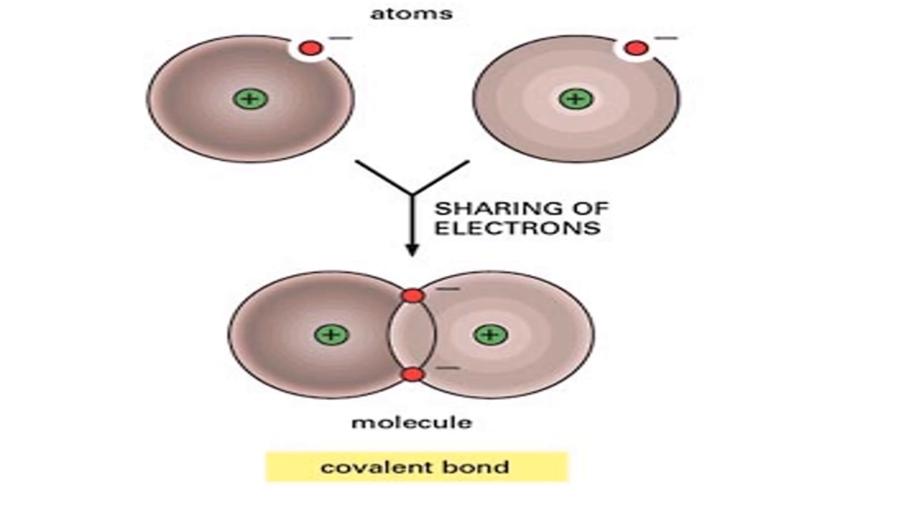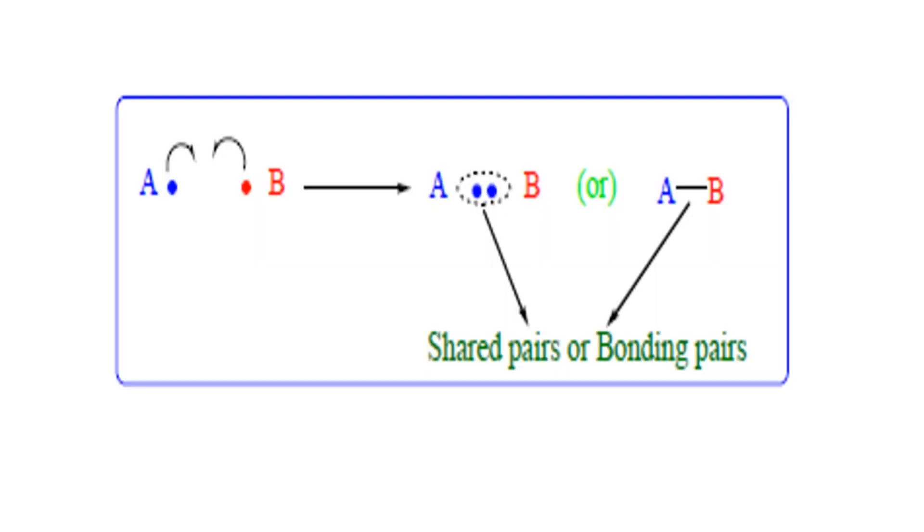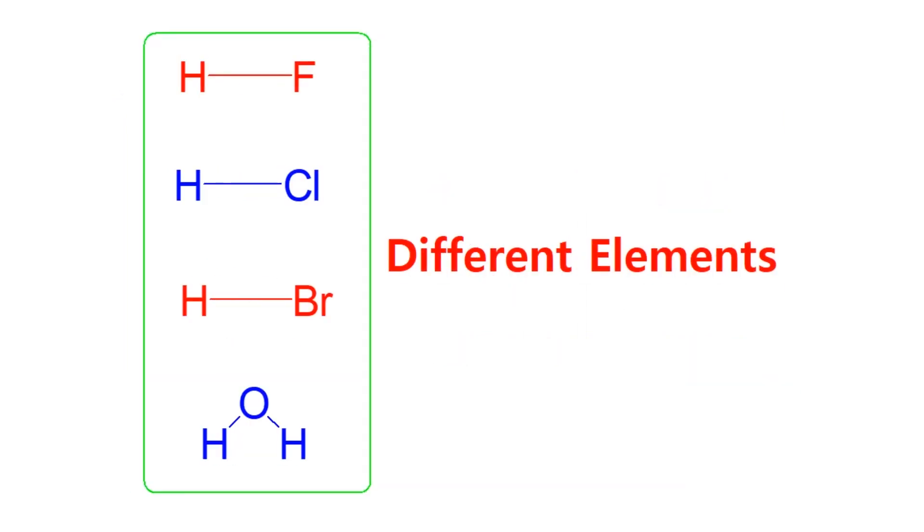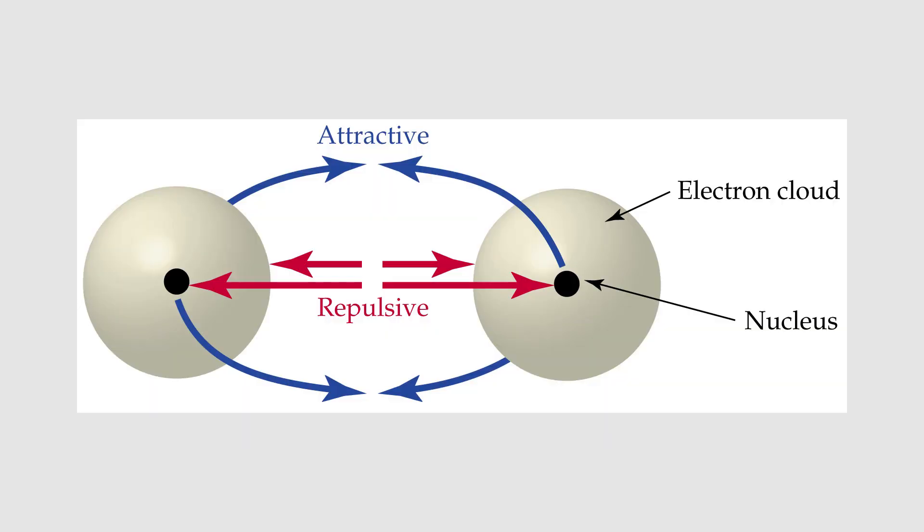A covalent bond is a chemical bond that involves the mutual sharing of electron pairs between atoms. These electron pairs are known as shared pairs or bonding pairs. This type of bonding occurs between two same elements or different elements. Usually, each atom contributes one electron to form a pair of electrons that are shared by both atoms. They have stable balance of attractive and repulsive forces between atoms.